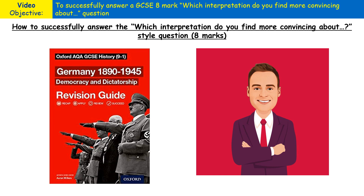Hello and welcome to Mr Manley History Teacher's latest video on how to successfully answer the 'which interpretation do you find more convincing' question. It's worth eight marks of your Germany from 1890 to 1945 Democracy and Dictatorship assessment paper. Let's get started with the main tips on how to answer this type of question.